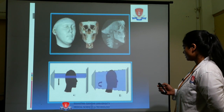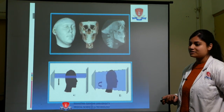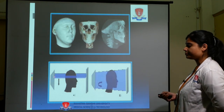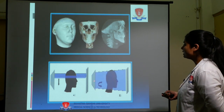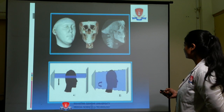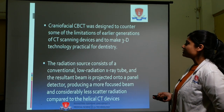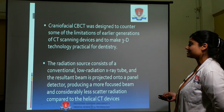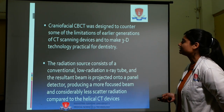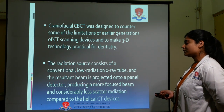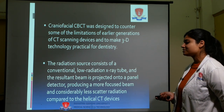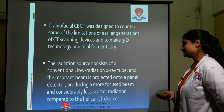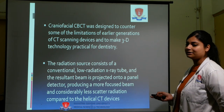The main difference between CT and CBCT is that in CT, a fan-shaped beam is used, whereas in CBCT, a cone-shaped beam is used. Craniofacial CBCT was designed to counter some of the limitations of earlier generations of CT scanning devices and to make 3D technology practical for dentistry. The radiation source consists of a conventional low-radiation X-ray tube, and the resultant beam is projected onto a panel detector, producing a more focused beam and considerably less scatter radiation compared to helical CT devices.